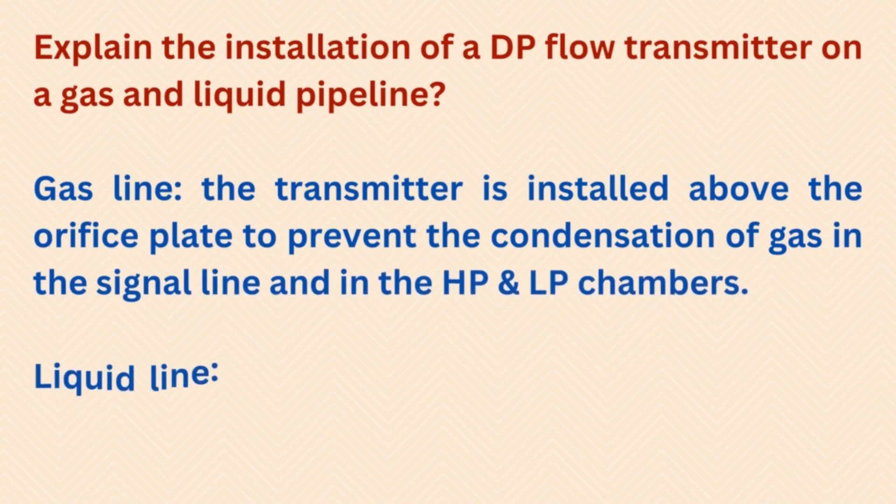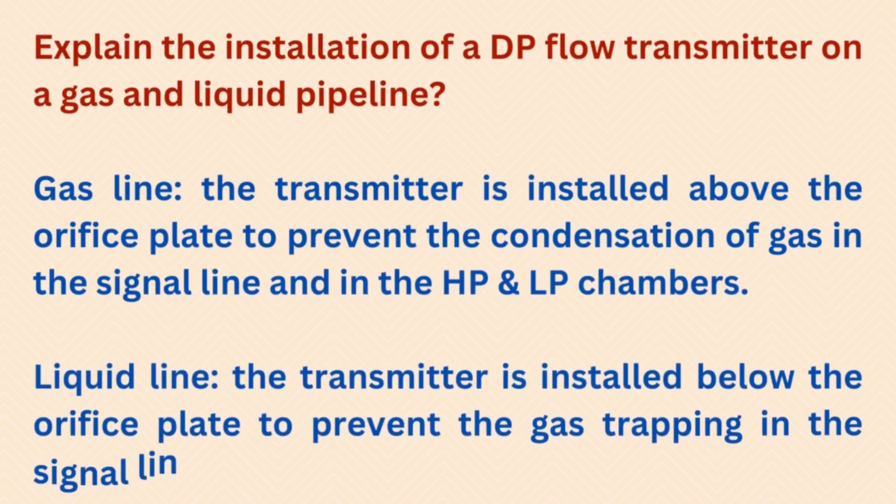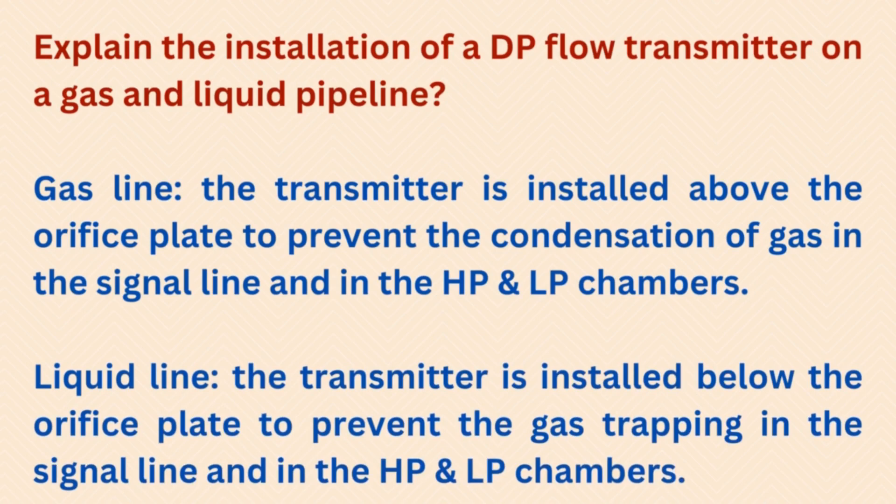Explain the installation of a DP flow transmitter on a gas and liquid pipeline. Gas line: the transmitter is installed above the orifice plate to prevent condensation of gas in the signal line and in the HP and LP chambers. Liquid line: the transmitter is installed below the orifice plate to prevent gas trapping in the signal line and in the HP and LP chambers.